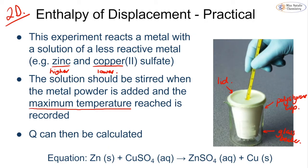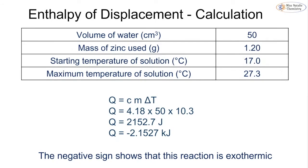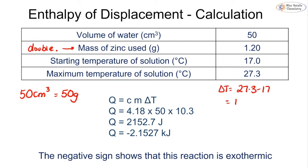The equation is: Zn + CuSO₄ → ZnSO₄ + Cu. We have our volume of solution, starting and maximum temperatures. Our specific heat capacity C is 4.18, m is 50 grams (50 cm³ of solution), and ΔT is 27.3 − 17.0 = 10.3. Substituting into Q = mcΔT and dividing by 1000 gives a value of −2.1527 kJ. The negative sign indicates an exothermic reaction because we see a rise in temperature.